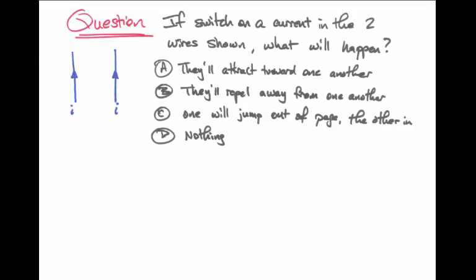Imagine we have two wires whose currents are passing straight up in the picture. If we switch on the current, what will happen to the two wires?